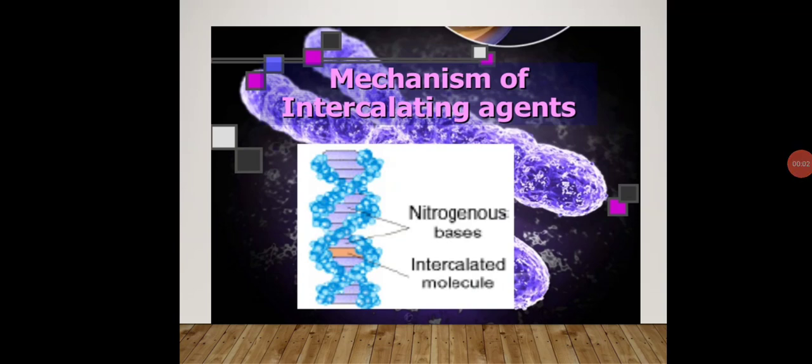Welcome dear students. In this lecture we are going to see another mutagen — intercalating agents. Up till now we have discussed physical mutagens, UV and X-rays, then base analogs such as 5-bromouracil and aminopurine, and afterwards chemicals like nitrous oxide as a mutagen. Now in this lecture we will see about the intercalating agents.